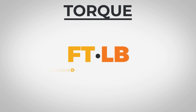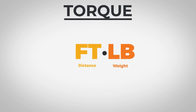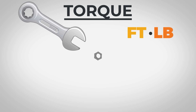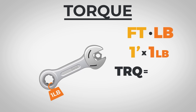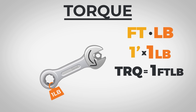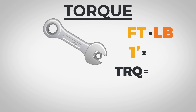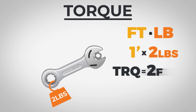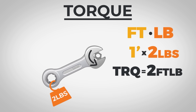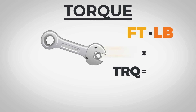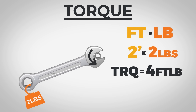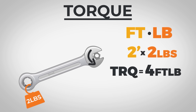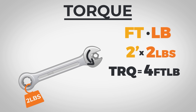Foot-pounds always confused me at first — you're combining feet with pounds. But here's what helped make it click. If you imagine a one-foot lever and put one pound of pressure on the end, the resulting twisting motion is one foot-pound of torque — one foot times one pound equals one foot-pound. Apply two pounds of pressure to that same one-foot lever and that's two foot-pounds. Make the lever two feet long and apply two pounds of pressure, and you have four foot-pounds of torque. It's basically just a combined measure of leverage and force.